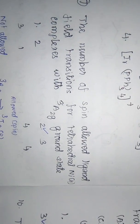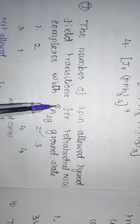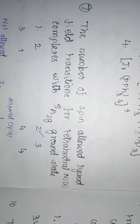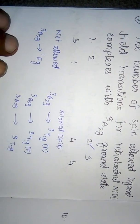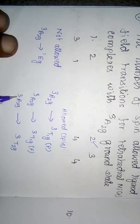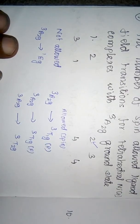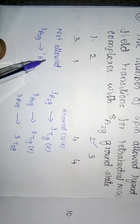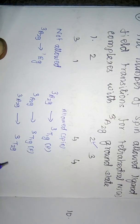The next question is the number of spin-allowed ligand field transitions for a tetrahedral Ni2+ complex with a 3A2g ground state. There are four transitions: 3A2g → 3T1g(P), 3A2g → 3T1g(F), and 3A2g → 3T2g are all spin-allowed because the spin is not changing. However, 3A2g → 1Eg involves a spin change, so it is not spin-allowed. All four transitions are Laporte forbidden since they are gerade to gerade. So there are three spin-allowed transitions.